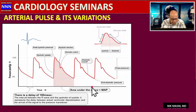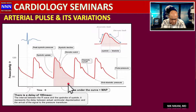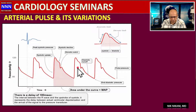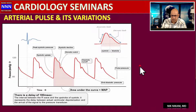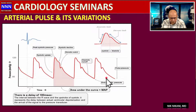On an arterial line waveform, the end-diastolic pressure is approximately 80 mmHg, the peak represents systolic blood pressure, and the area of diastolic runoff is visible after the dicrotic notch. This area represents the mean arterial pressure, which computers calculate and display as a straight line on top of the waveform to help monitor blood pressure and titrate drugs to maintain MAP above 70 or 80 mmHg.